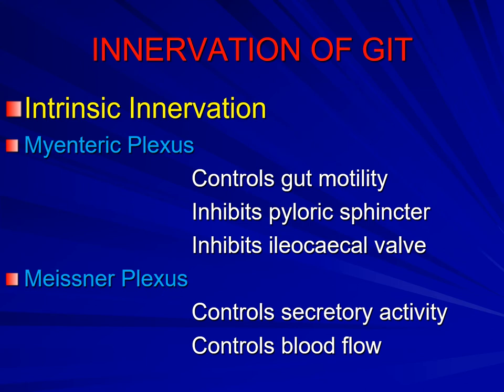The Meissner's plexus or submucosal plexus is involved in controlling blood flow and the secretory activities taking place in different segments of the GIT. It is mainly concerned with the secretory function by manipulating the status of blood flow. Both plexuses are interconnected with each other and are also influenced by extrinsic innervation.